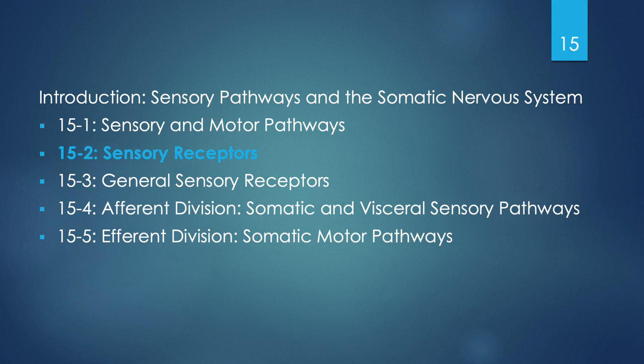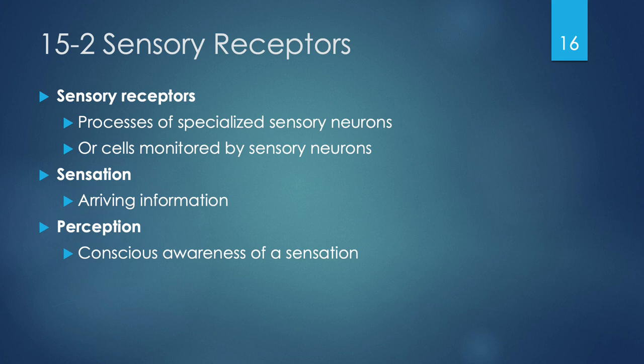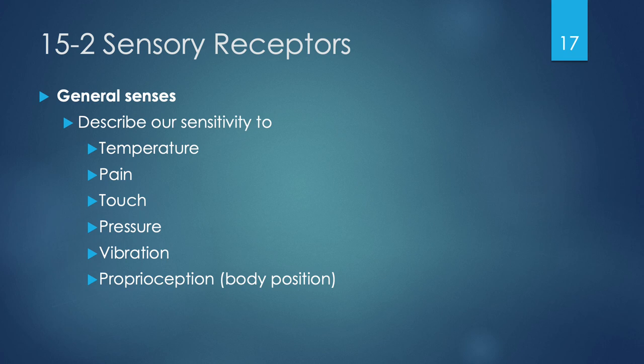In section 15-2, sensory receptors are either processes of specialized sensory neurons or cells monitored by sensory neurons, providing information to our CNS about internal or external environments. Information arriving at the CNS is called a sensation; once we become consciously aware of it, it's called a perception. Our general senses are broadly distributed throughout the body and monitor sensitivity to temperature, pain, touch, pressure (light or deep), vibration, and proprioception — our body position in space and time.